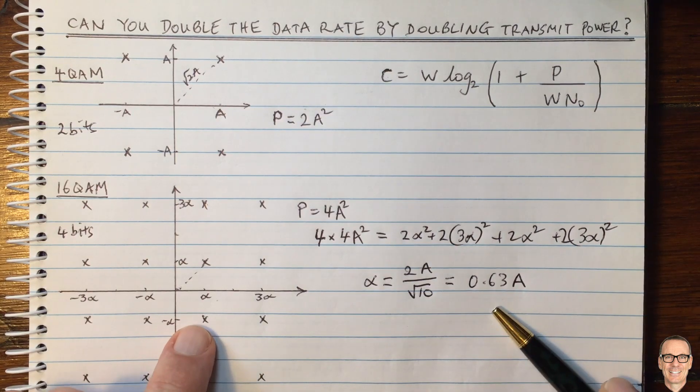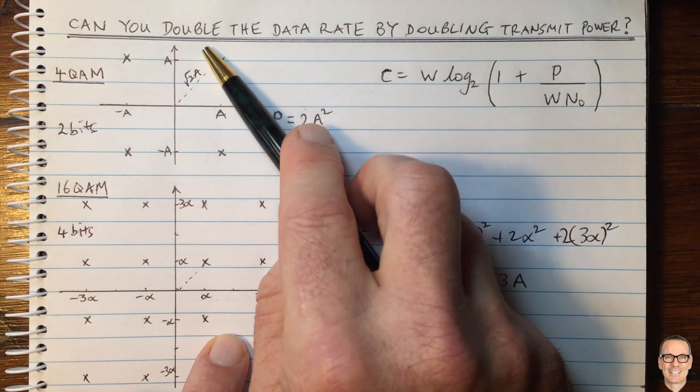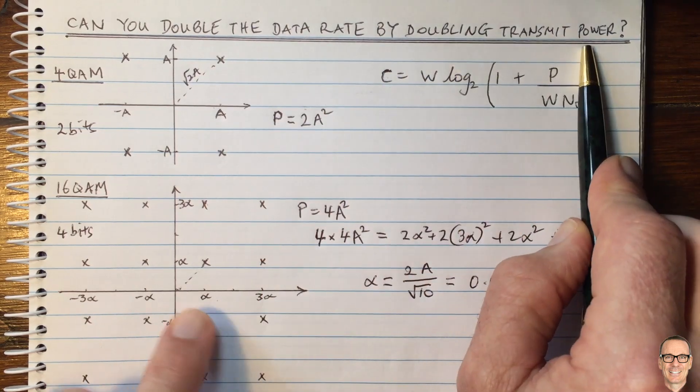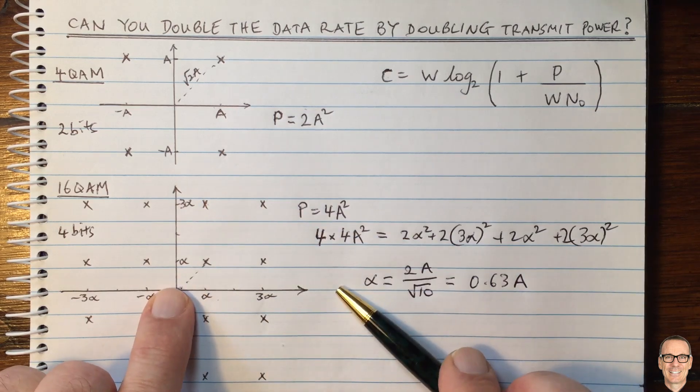So therefore, the bit error rate has gone up. So the answer is that you cannot double the data rate by doubling the transmit power, at least not keeping the same bit error rate.